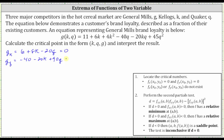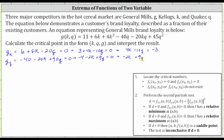Now we set both equations equal to zero and solve as a system of equations. Let's simplify: divide both sides of the first equation by two, which gives us three plus four k minus 10q equals zero. Divide both sides of the second equation by ten, giving us negative four minus two k plus nine q equals zero. Moving constants to the right side: the first equation becomes four k minus 10q equals negative three, and the second becomes negative two k plus nine q equals positive four.